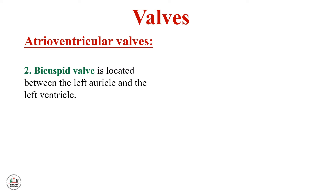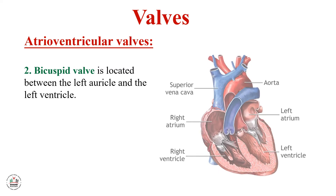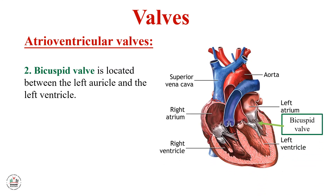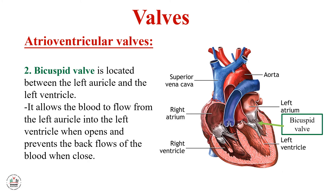Second, the bicuspid valve: when open it allows blood to flow from the left auricle into the left ventricle, and it prevents the backflow of blood when closed.